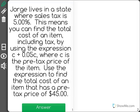Jorge lives in a state where sales tax is 5.00%. This means you can find the total cost of an item, including tax, by using the expression C plus 0.05C, where C is the pre-tax price of the item. Use the expression to find the total cost of an item that has a pre-tax price of $45.